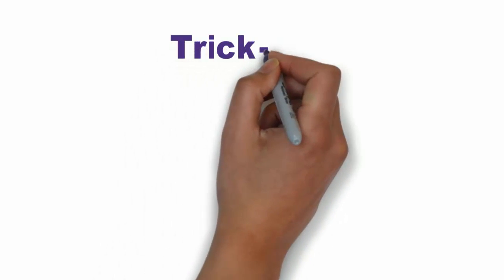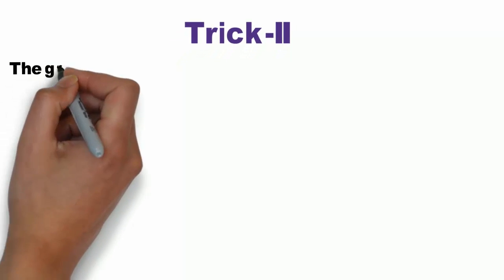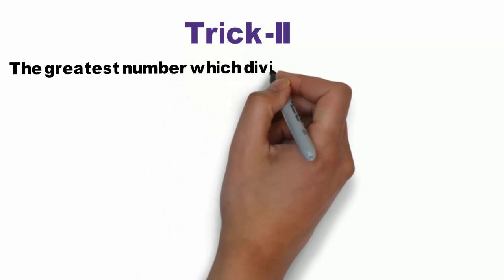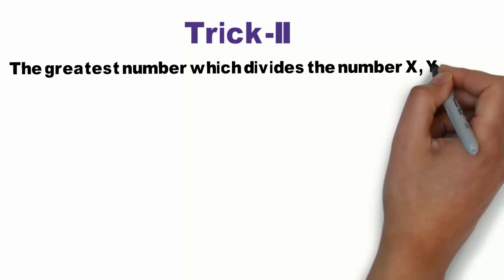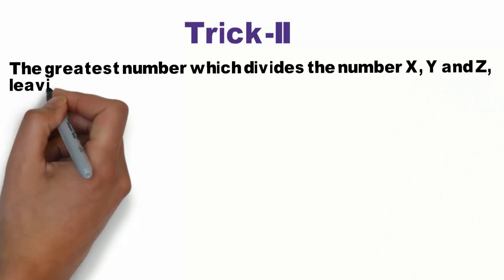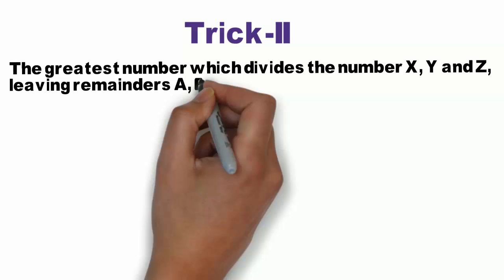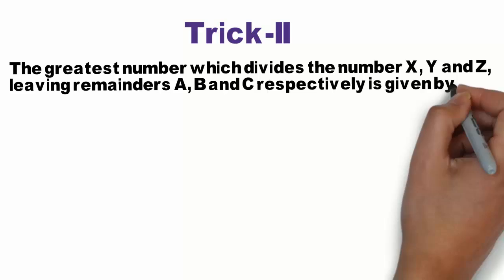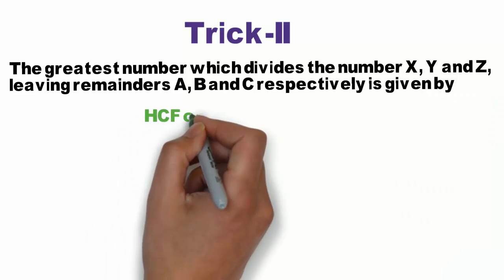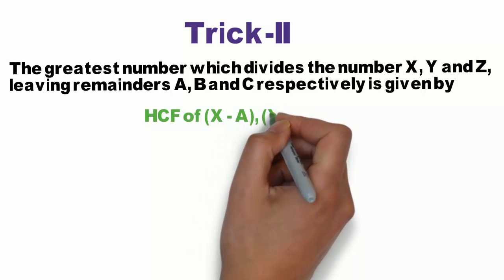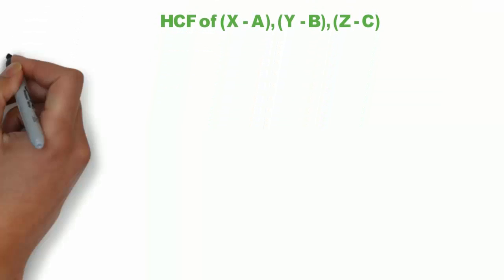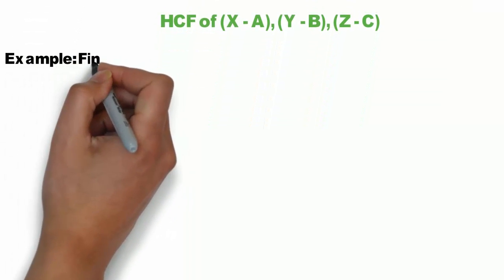Trick Number 2: The greatest number which divides X, Y, and Z leaving remainders A, B, and C respectively is given by the HCF of (X − A), (Y − B), and (Z − C).